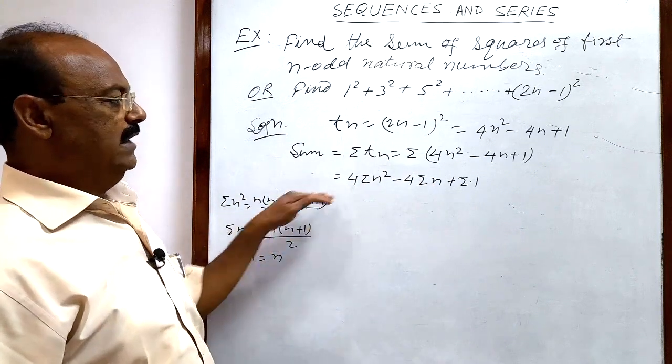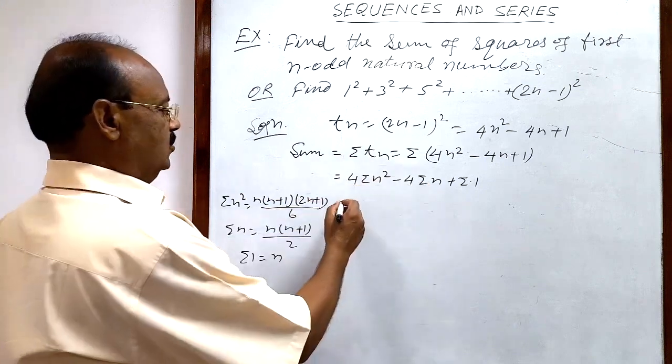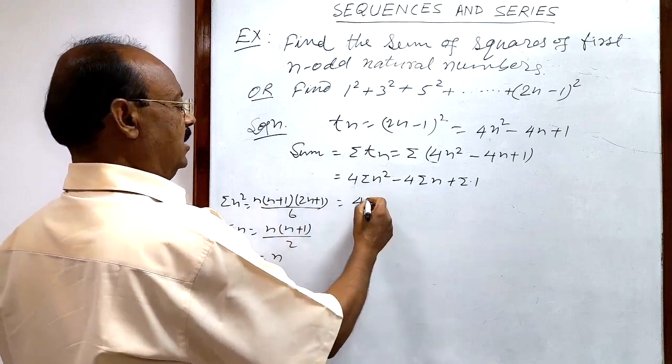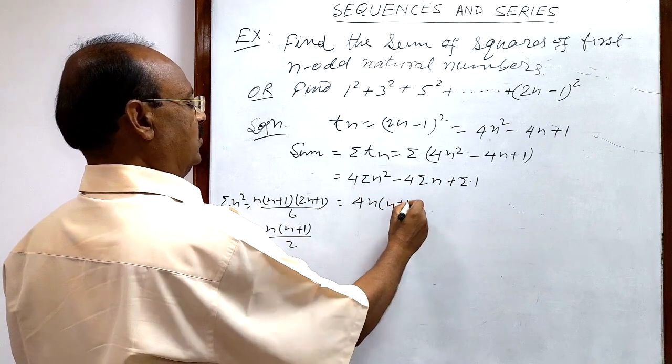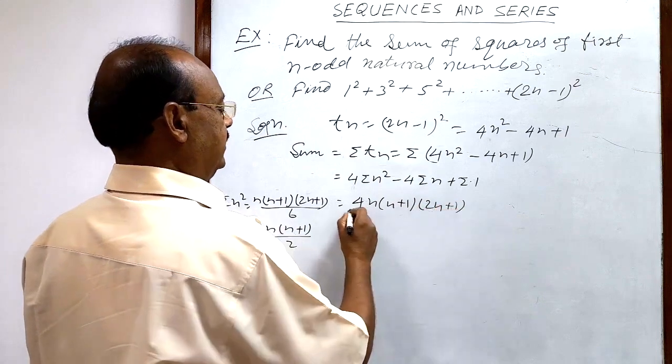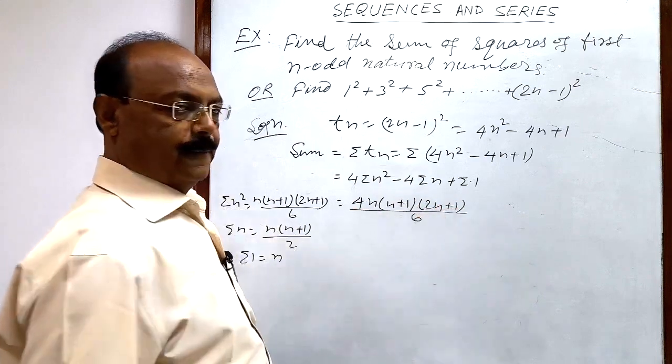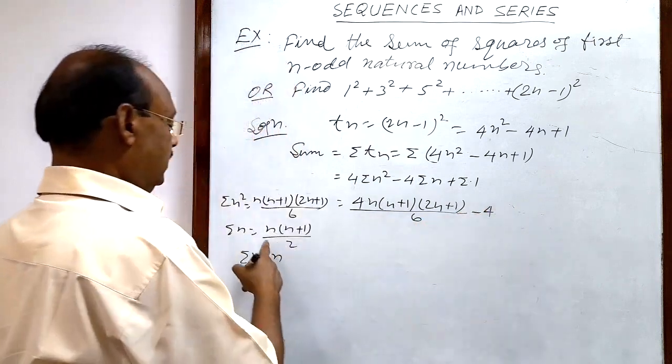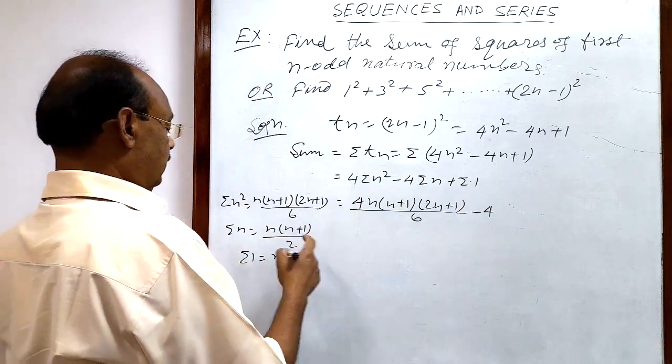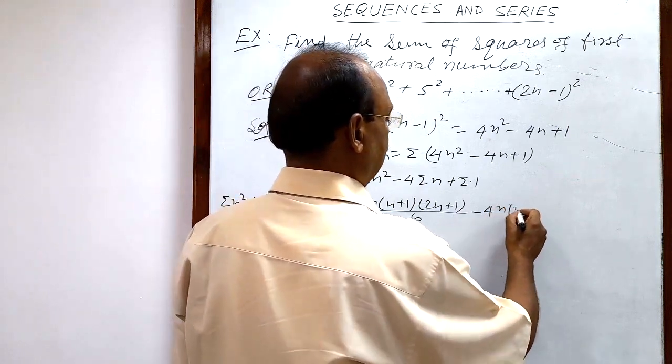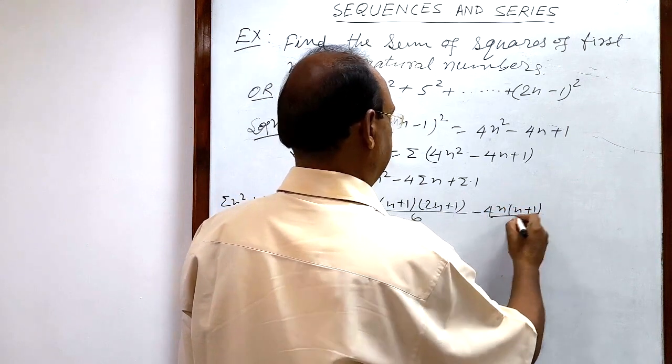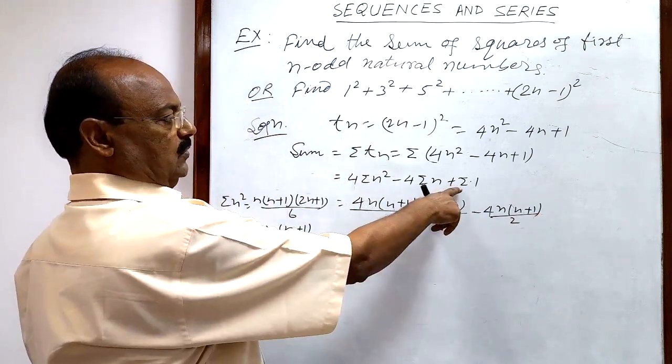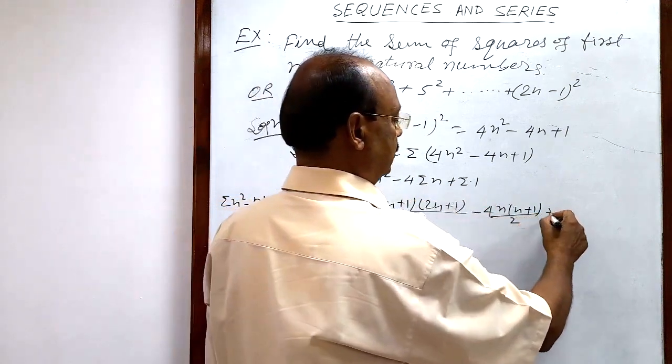Now, let us put these values in this expression. So this is equal to 4 × sigma n². Sigma n² is n(n+1)(2n+1)/6. And next term is -4 sigma n is n(n+1)/2. And last term is sigma 1 that is equal to n.